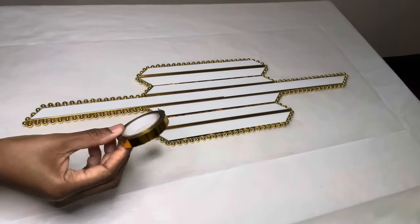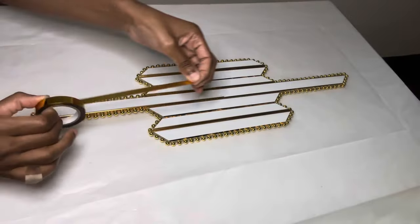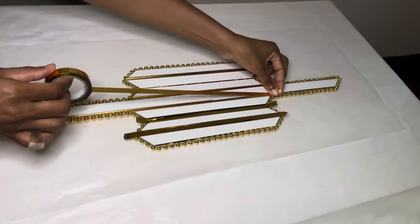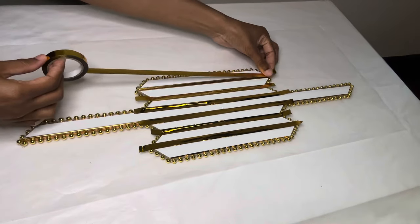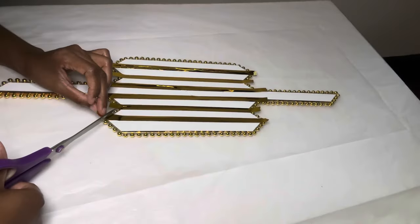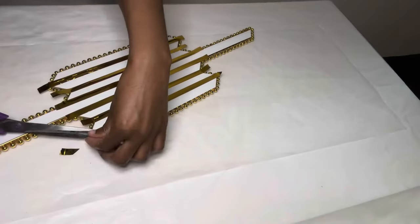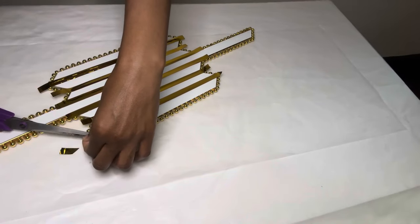I'm using this gold metallic tape that I purchased from Amazon to hide the glue that seeped through. Instead of cutting the tape straight across, I decided to cut the tape to match with the zigzag pattern.